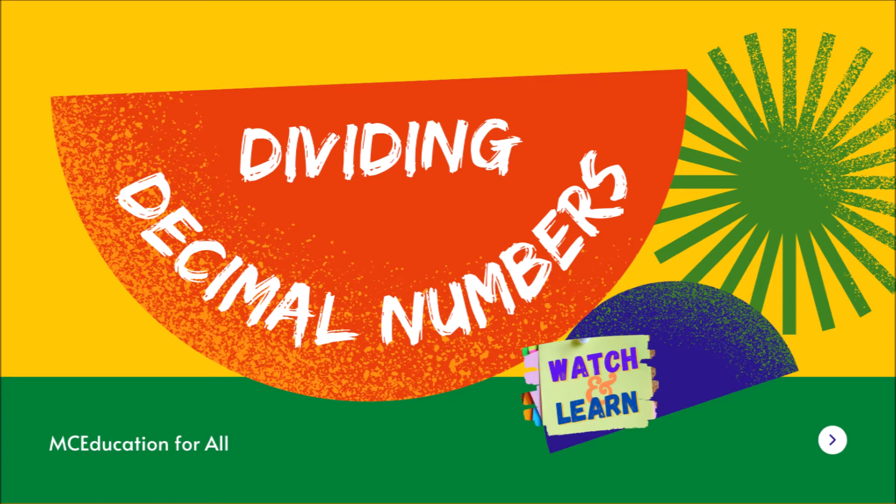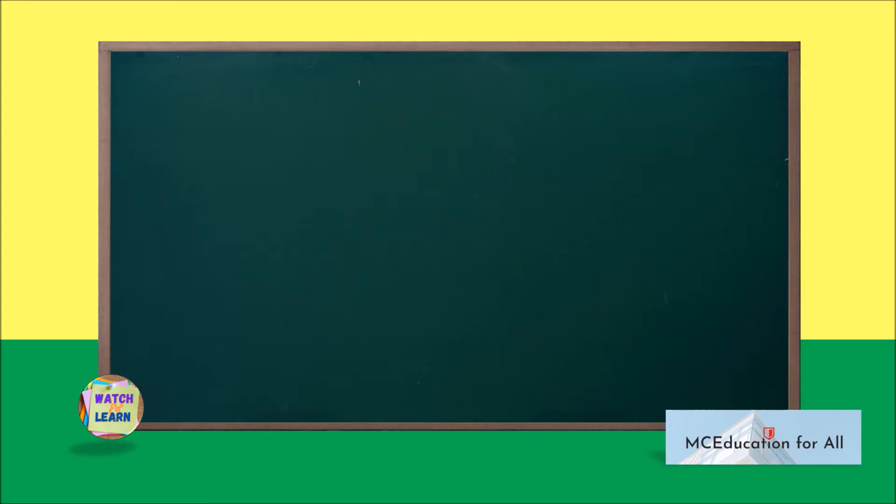First, let's divide a decimal by a whole number: 73.92 divided by 6. Here, the dividend is a decimal and the divisor is a whole number. The division of decimals with a whole number is easily done by taking the following steps: ignore the decimal and divide normally until you get 0 as the remainder.